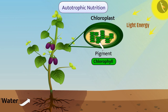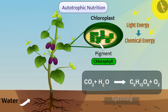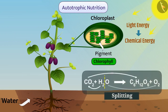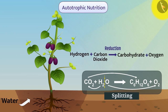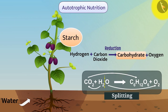Through different reactions, light energy is converted into chemical energy. The water molecules are split into hydrogen and oxygen. With the help of the obtained hydrogen, carbon dioxide is reduced to carbohydrate and oxygen is released into the air. Organisms get energy from carbohydrates. In the form of starch, carbohydrates are stored in the leaves or in different parts of the plant.